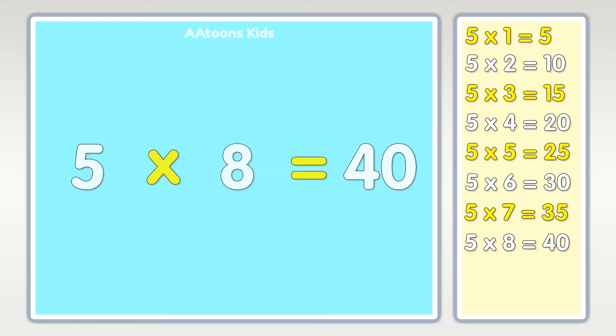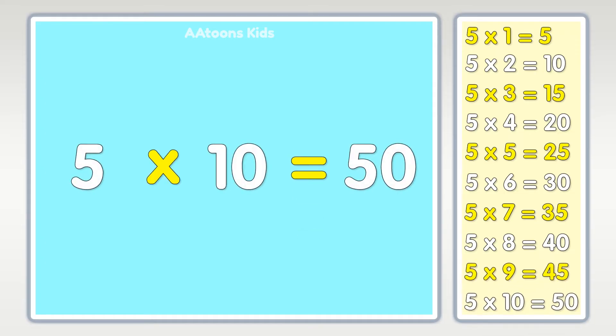Five times nine is forty-five, five times ten is fifty.